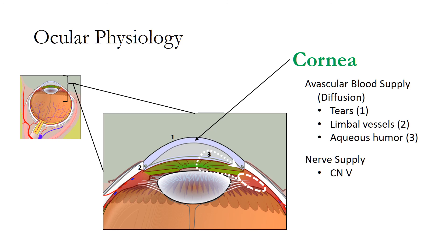The cornea is nourished by diffusion from three different sources: externally from the tears, from the surrounding limbal vessels, and from the aqueous humor within the eye. The aqueous humor is a clear, watery fluid similar to blood plasma. It permeates the space between the back surface of the cornea, the front surface of the vitreous, and surrounds the lens. Aqueous humor is produced in the vicinity of the ciliary body, travels around the lens and cornea, and exits the eye as shown. The cornea is innervated by the fifth cranial nerve.